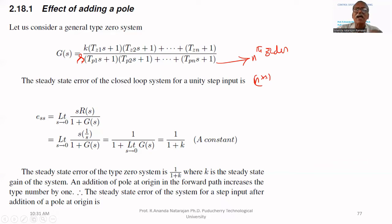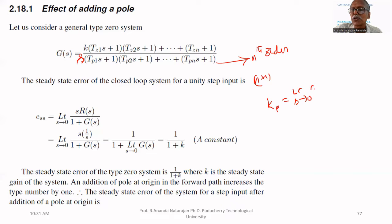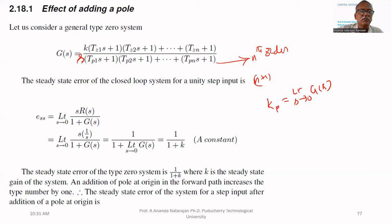Second point: if you add a pole at origin, it will remove the steady state error. What is kp of a type zero system? It is the limit as s tends to zero of G(s). For a type zero system, if you put s equal to zero, all terms become 1 except k, so kp equals k.